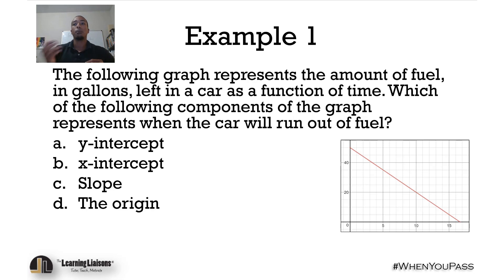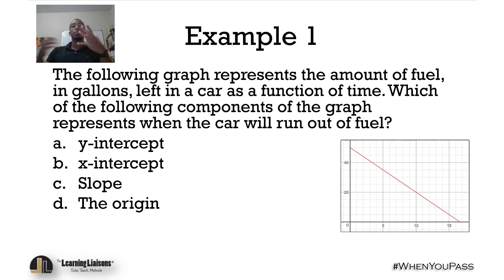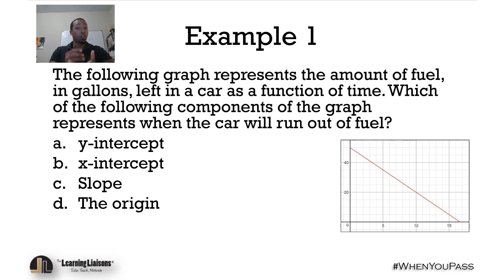The following graph represents the amount of fuel in gallons left in a car as a function of time. Which of the following components of the graph represents when the car will run out of fuel? Let's think about the context first, then what we're trying to solve for, make our plan, and solve.